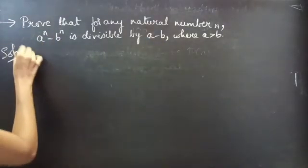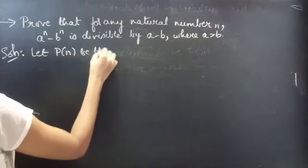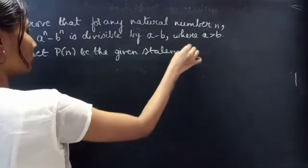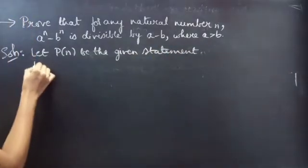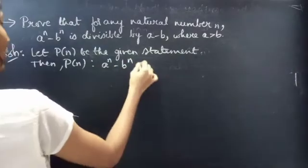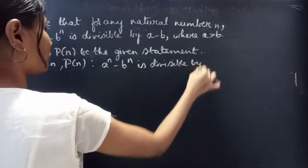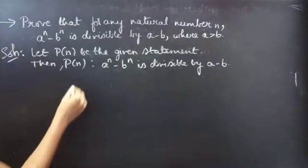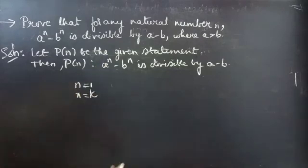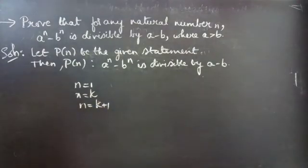Solution. Let P of n be the given statement, such that a power n minus b power n is divisible by a minus b. Firstly we will prove the statement is true for n equals to 1, and later we will assume that the statement is true for n equals to some k which belongs to natural numbers. And finally, we will prove for n equals to k plus 1.